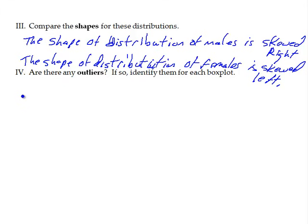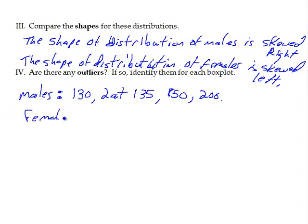The last one, are there any outliers? For males, we had some to the right. There was an outlier at 130, two outliers at 135, another one at 150, and then the last one at 200. So there were five outliers to the right. For the females, we had three at the left: 55, 45, and 40.